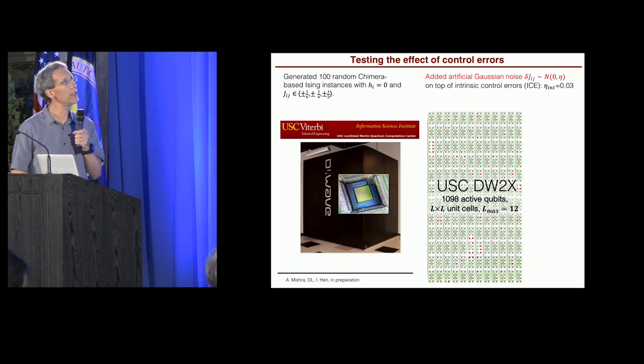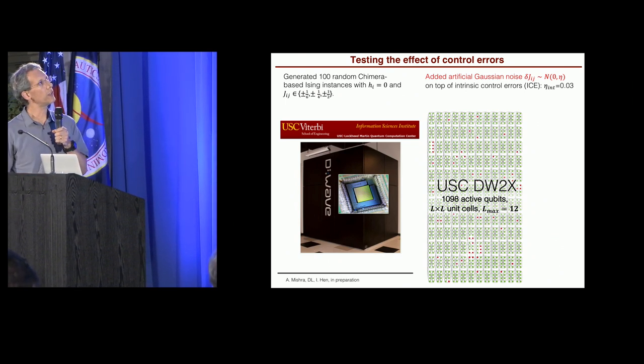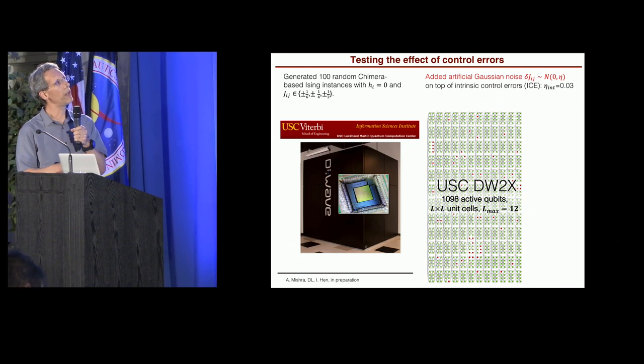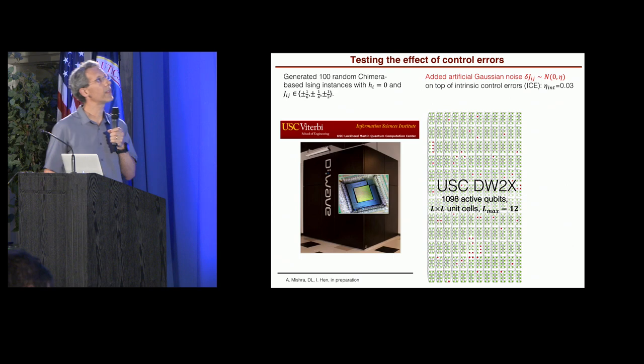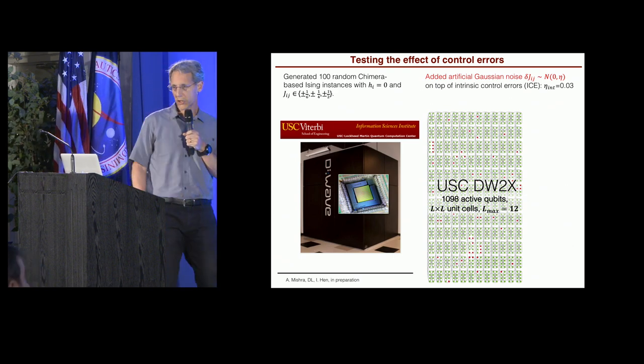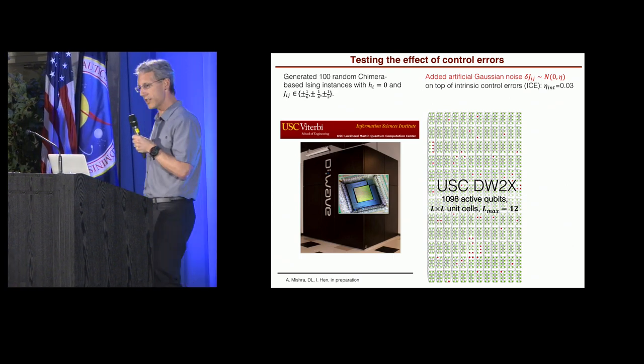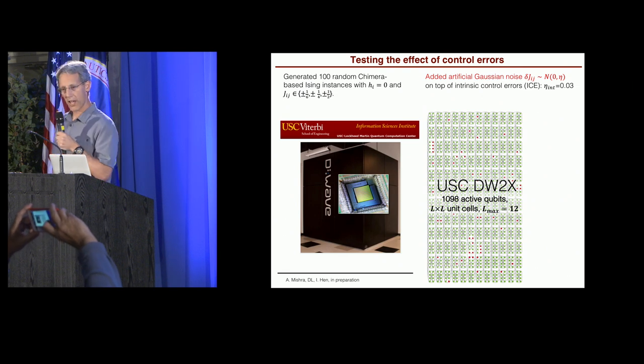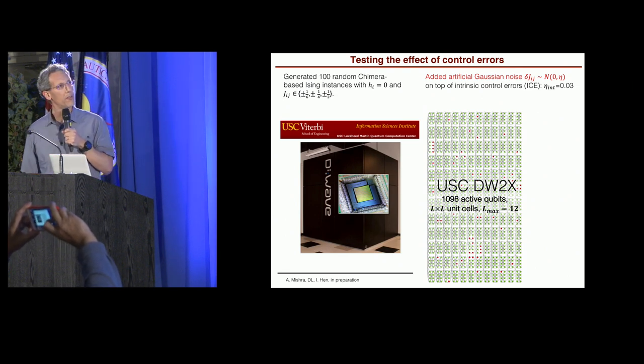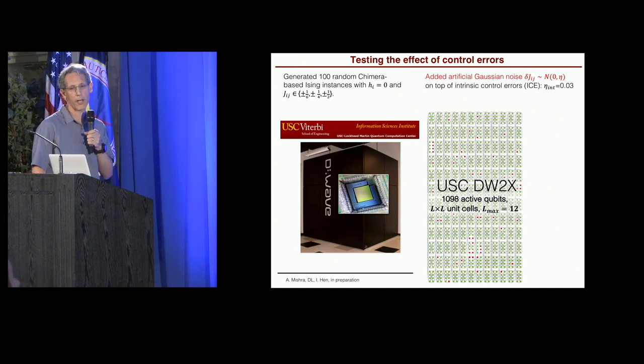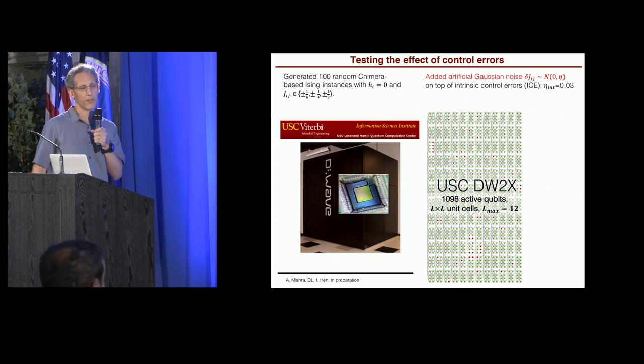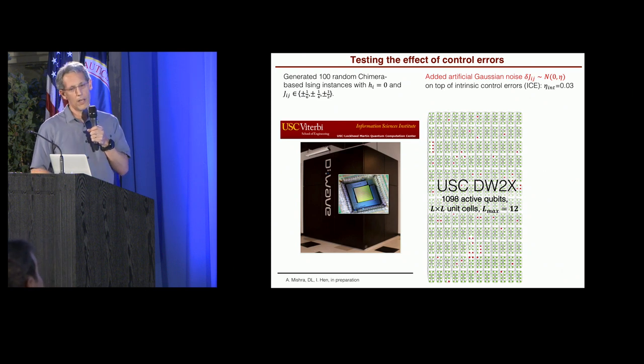And then what we did was we added artificial Gaussian noise with zero mean and standard deviation eta. And now, mind you, this is on top of the known existing intrinsic control errors, ICE, which are estimated for this device to have a standard deviation of 0.03 in units where the maximum coupler strength is one.